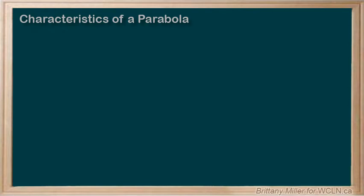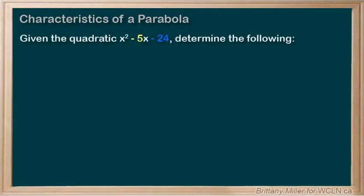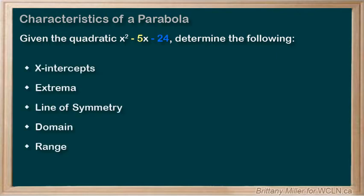All right, new example. Given the quadratic x squared minus 5x minus 24, determine the following, and then we have a very similar list to the one that we did in the last example.